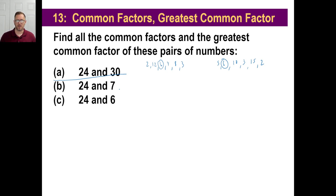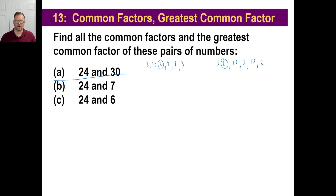24 and 7 — what's the greatest common factor that goes into both of those? Kind of weird, isn't it? There isn't anything, right? 7 just has 7 and 1. 24 has a ton of them, but not 7. So really, there's nothing there except for 1.